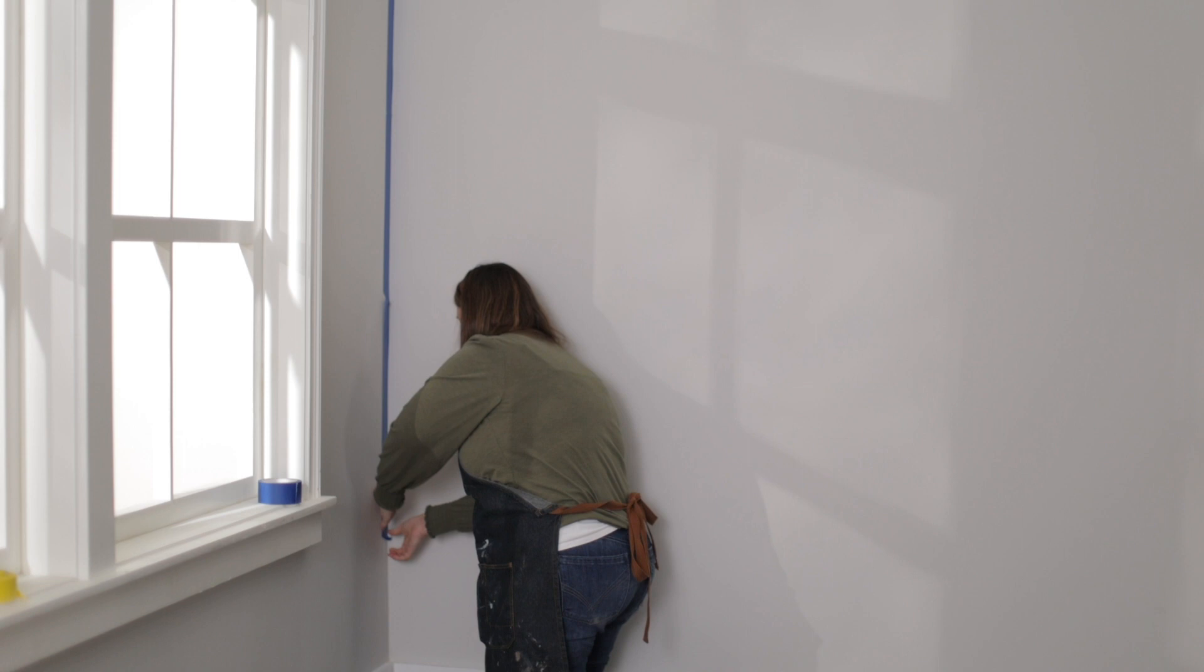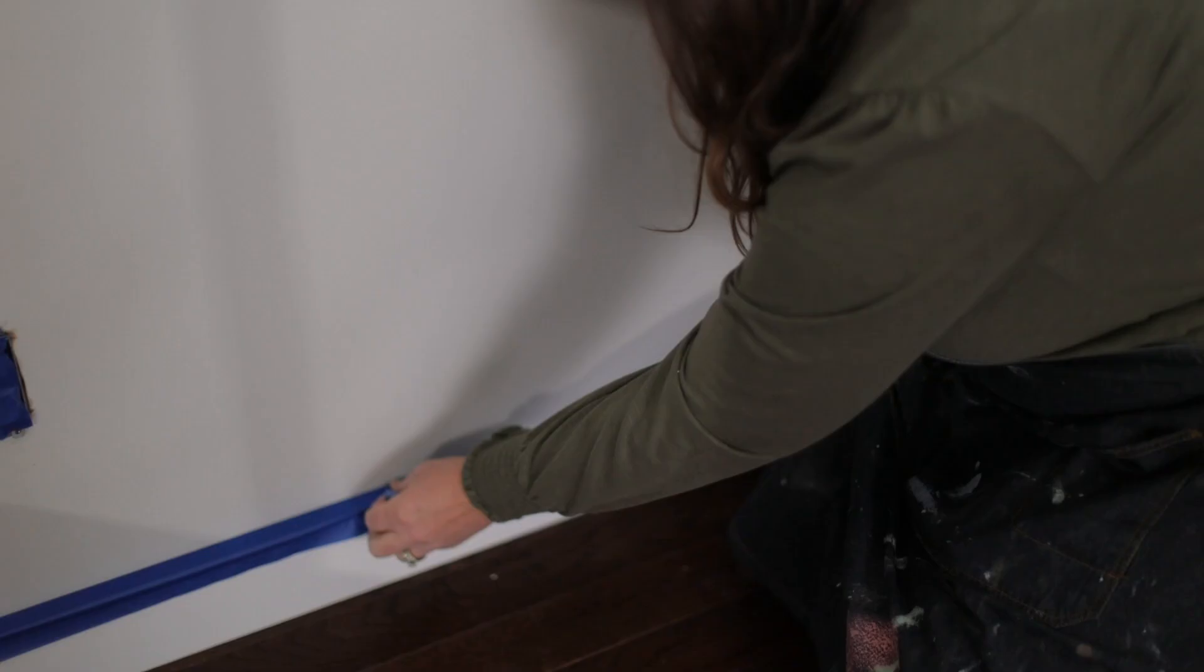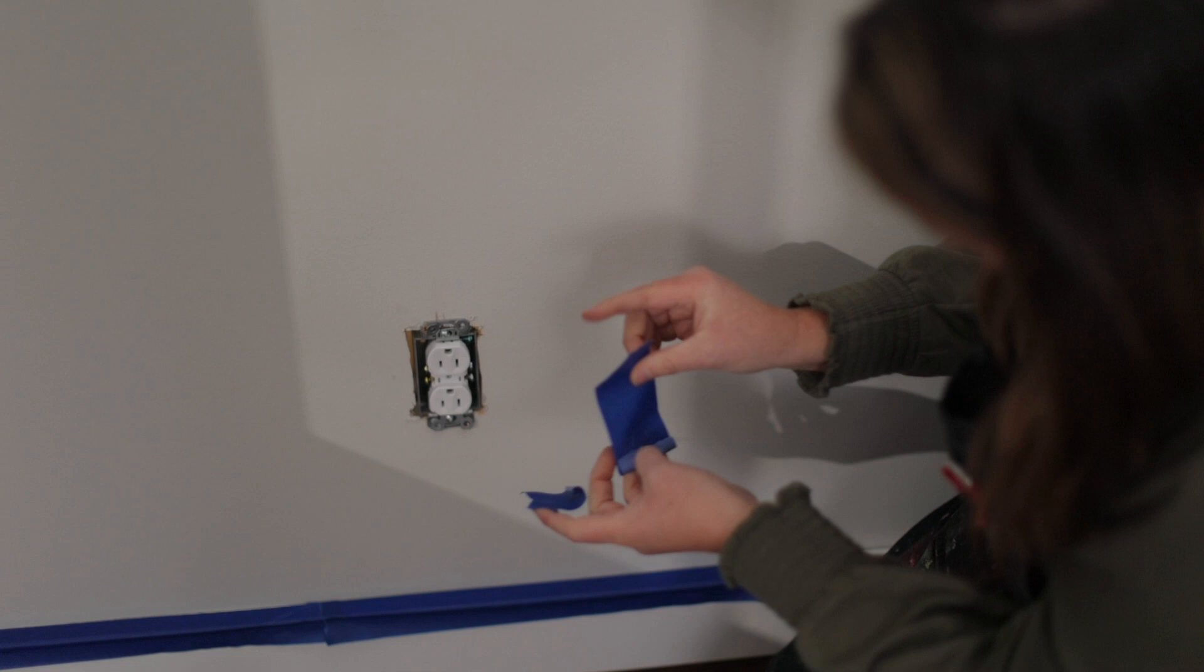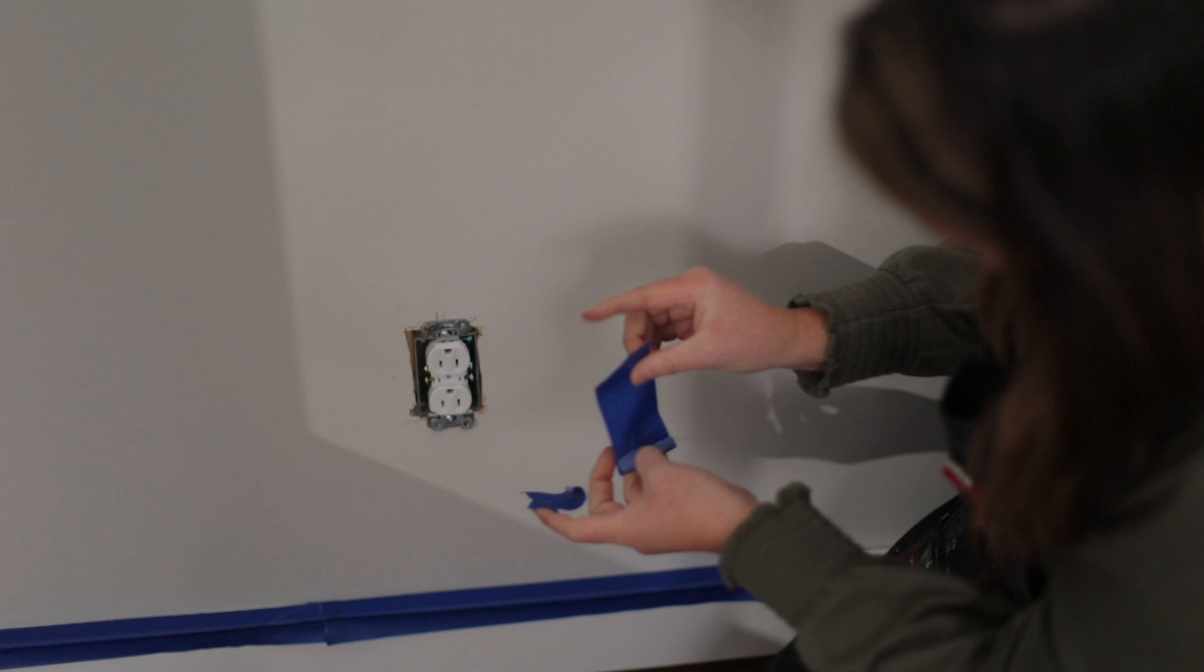Step four, apply painters tape. Use a low stick painters tape like ACEs clean release painters tape to tape the walls and the baseboards. Follow up with the damp cloth to really lock in that tape.